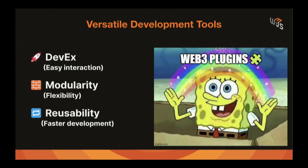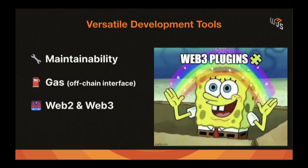Why are Web3 plugins good for the industry? They improve developer experience by providing a really easy way to interact with products. Web3 plugins give a modularity approach to the ecosystem, allowing you to implement any feature or functionality like a plug-and-play tool. This is also a lot of reusable code, improving the development process and making it faster. Web3 plugins are easy to maintain since Web3.js version 4 is really stable — no breaking changes or critical issues. For specific cases like Superfluid, they also provide an off-chain interface, helping save gas fees.